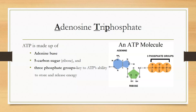ATP is short for adenosine triphosphate. ATP has three components. ATP is made up of an adenine base, which we see here. It is also made up of a five-carbon sugar called ribose, which is shown here, as well as three phosphate groups — one, two, three. These three phosphate groups are also reflected in the name itself: triphosphate describes the number of phosphate groups in this molecule.